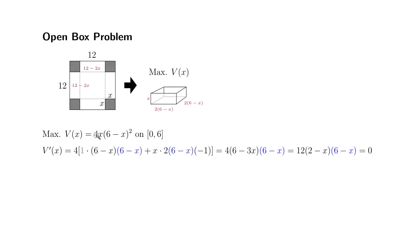So V prime of X goes like this. Alright, so 4 is a constant multiple, so we put it here. Then we're going to apply product rule to X times 6 minus X squared, right? Derivative of X is 1 times the quantity 6 minus X squared. So I write it as 6 minus X times 6 minus X.